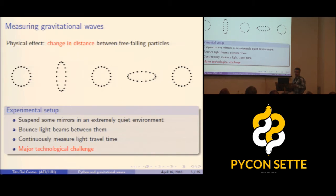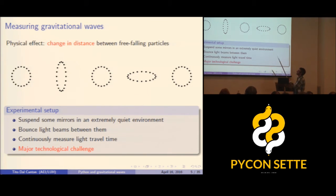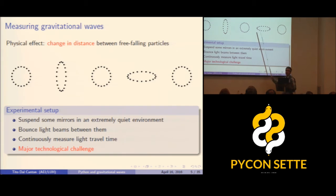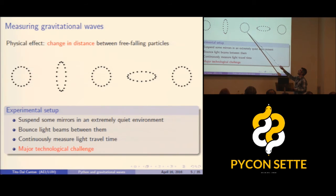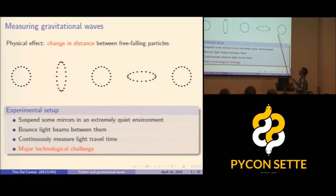How can we measure these waves? Imagine taking a ring of particles. The effect of gravitational waves is to change the distance between these particles if they are in free fall. The gravitational wave will squeeze the ring one way, then the next cycle brings it back to rest position, then it's squeezed the other way — oscillating with the wave.